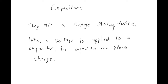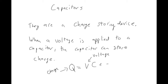The amount of charge that is stored on a capacitor is related by this equation: Q = VC. So Q is the charge, V is the voltage that you apply to the capacitor, and capital C is the capacitance of the capacitor.